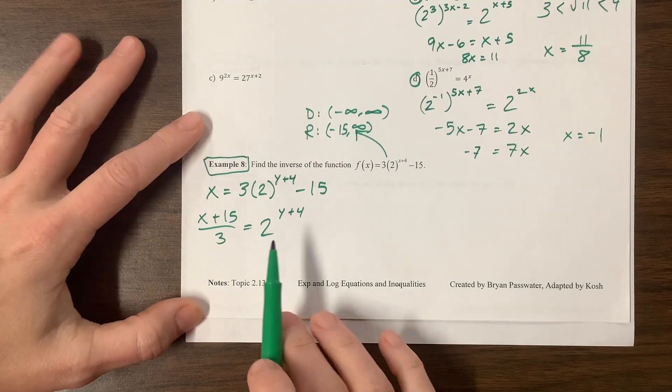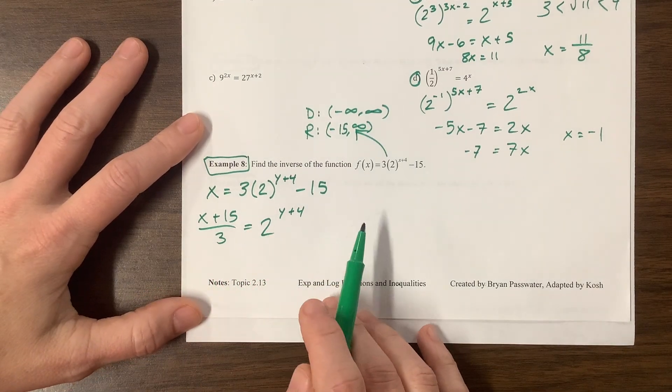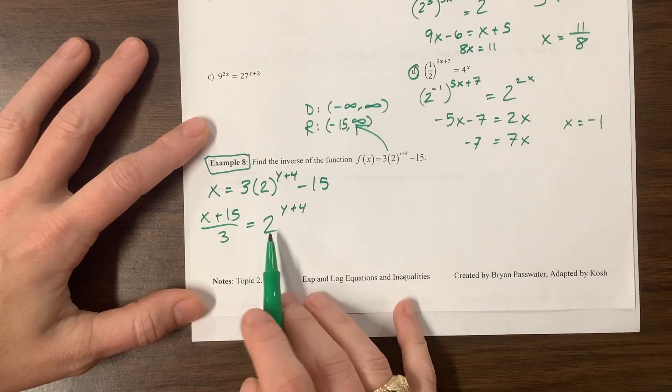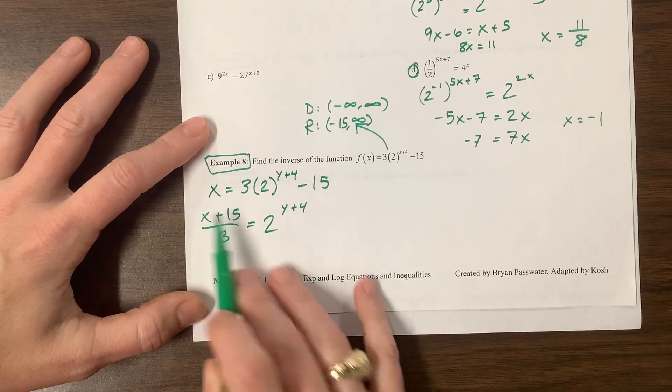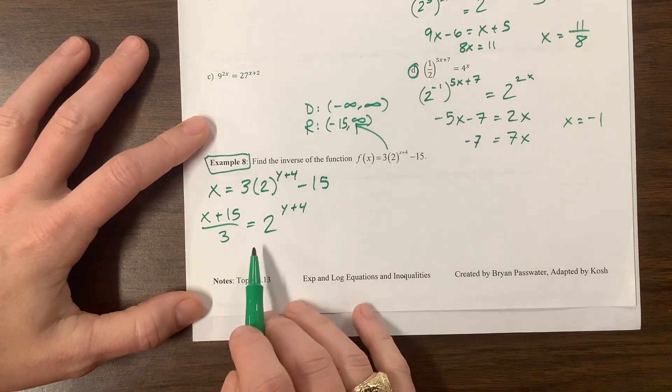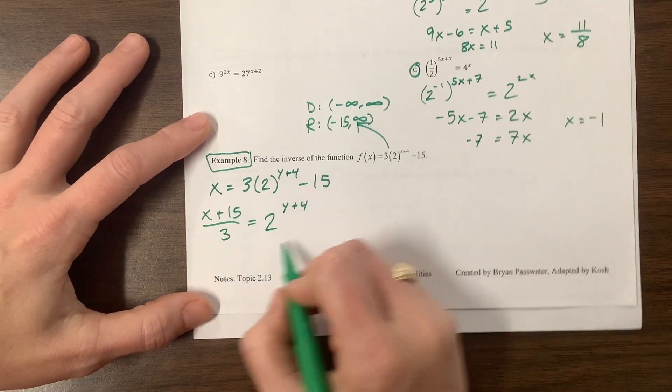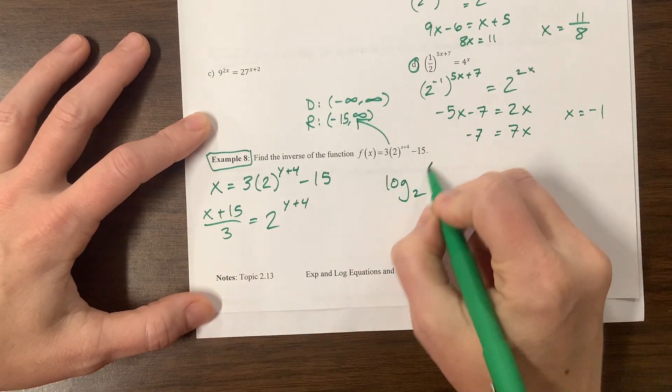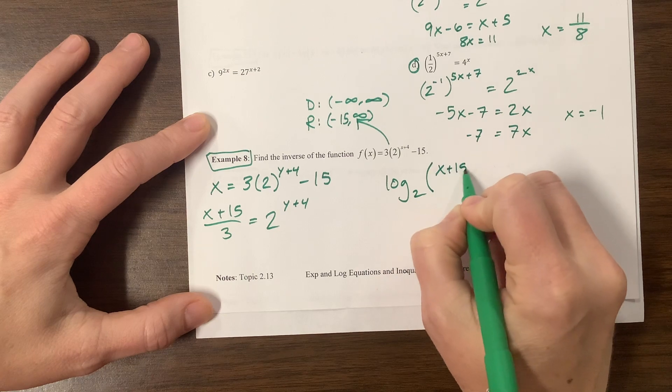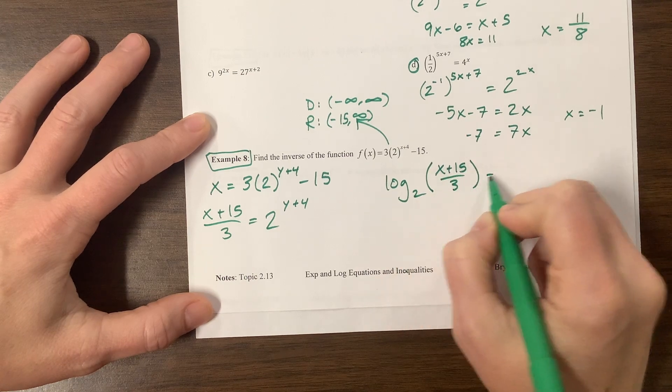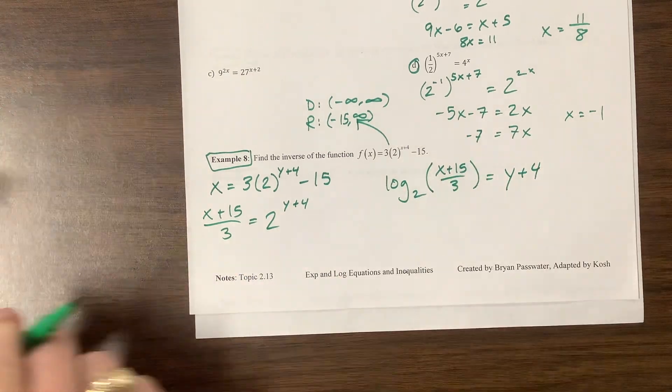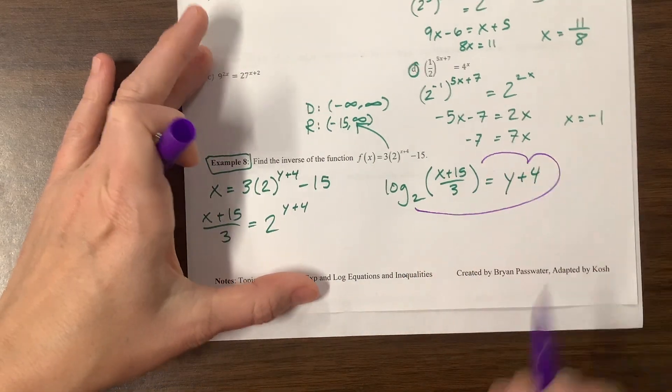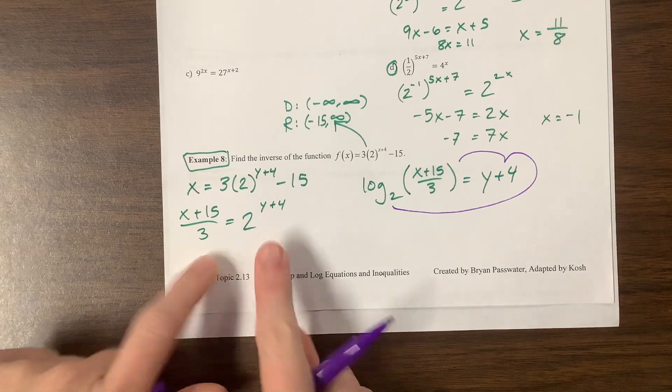On this one, one way to do it, you could take the log of both sides. The other way to think about it is that this is currently in exponential form. Here's the base, there's the exponent, and it's equal to this. And I can go from exponential form to logarithmic form by saying log, here's the base, 2 of what? Well, of x plus 15 over 3 is equal to y plus 4. And I can double check by doing I heart logs. 2 to the y plus 4 equals that. Was that what we had? It sure was.